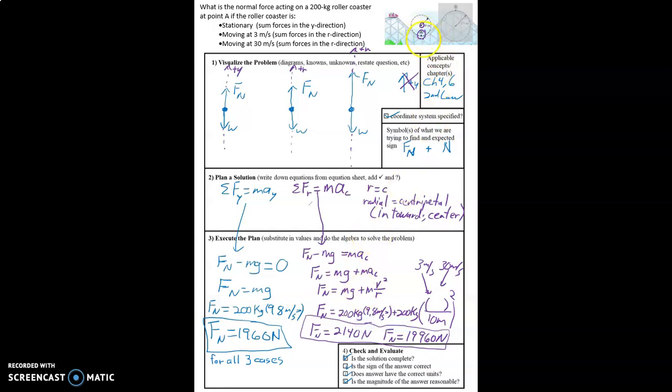And the reason is that here, the track is not just supporting the weight of the roller coaster car, it's also changing the direction of the roller coaster car. And the faster it's moving, the more force is required to change the direction of that roller coaster car.